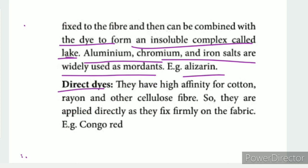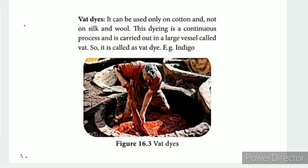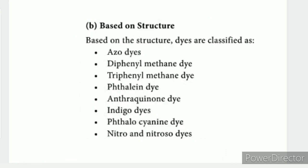Direct dyes have high affinity for cotton, rayon, and other cellulose fibers. They can be used directly on cotton but not on silk and wool. The dyeing process is continuous and is carried out in a large vessel. An example of a direct dye is indigo dye.